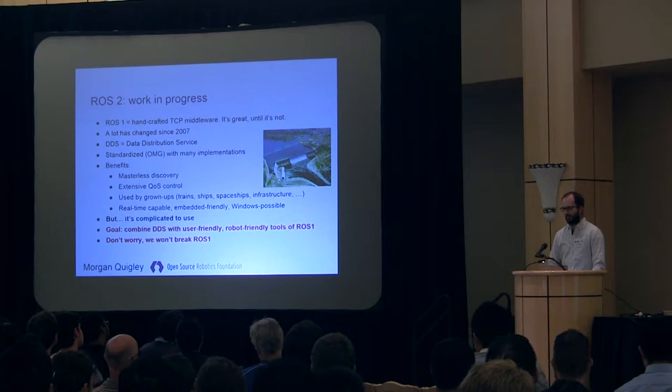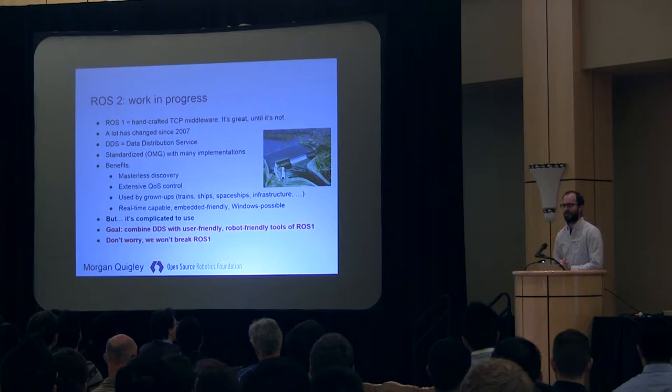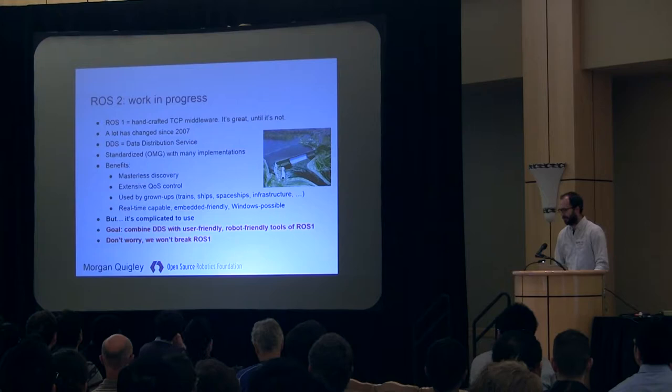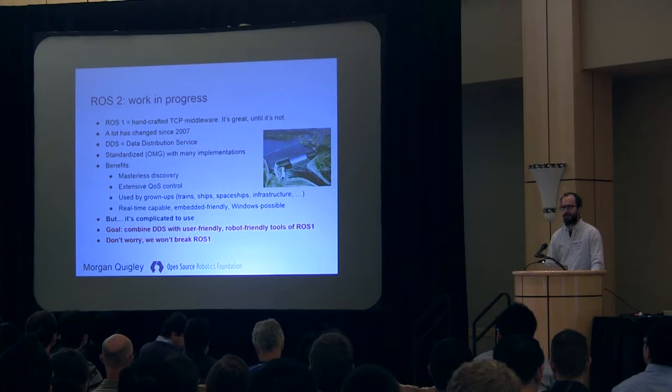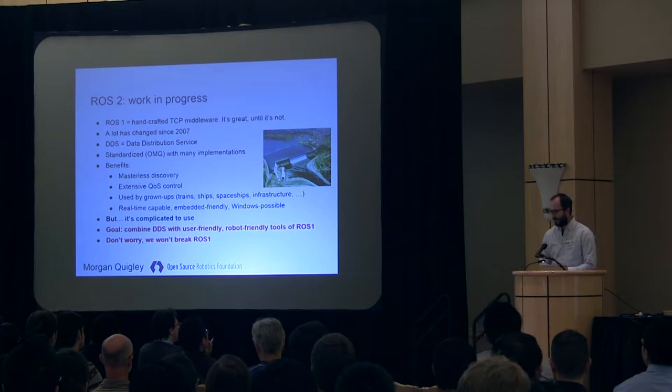It's used by a lot of what I call grown-up applications — zillion-dollar projects. That's the Grand Coulee Dam there, the biggest hydroelectric station in the States — it runs this thing. So obviously it apparently can work for a while without crashing. Some of the benefits you get from this DDS system: you can do masterless discovery, so you just launch programs and they find each other on your network. Very extensive quality of service — groups like NASA use it to handle the latency required to talk to a Mars rover, for example. Or you can use it on a local network where it essentially devolves to UDP blasting. A very capable and complex system, but it's complicated to use with all these features.